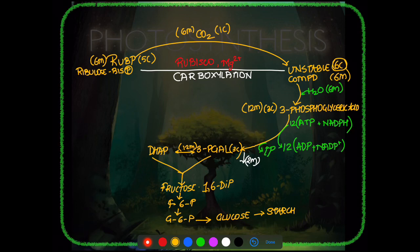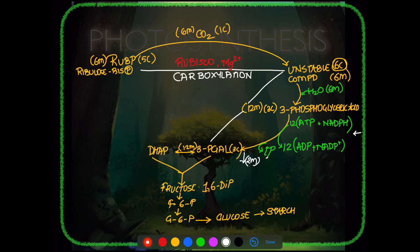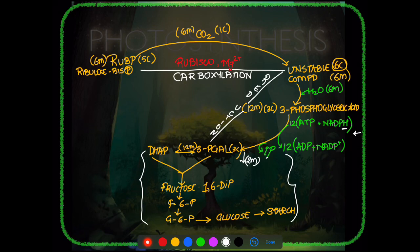Only 2 out of 12 molecules go toward glucose formation. The step from 3-PGAL onward is reverse glycolysis, using the same enzymes as glycolysis in reverse. The step from 3-PGA to 3-PGAL is called reduction since hydrogen is added. The remaining 10 molecules of 3-PGAL are used for the next step.